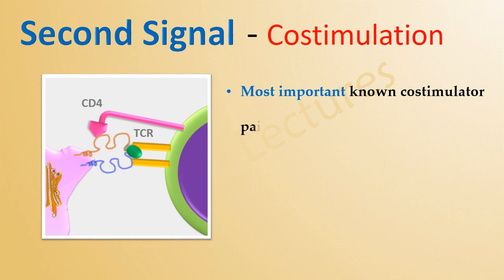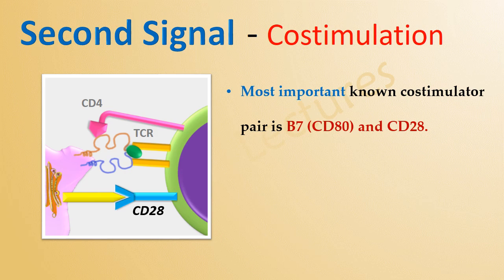More than 20 co-stimulators are known. The most important known co-stimulator pair is B7, also known as CD80, and CD28. CD28 acts as the receptor and is present on the T-cell, while B7 is the ligand and is present on the antigen presenting cell. These molecules also cause the two cells to adhere together for a longer time.